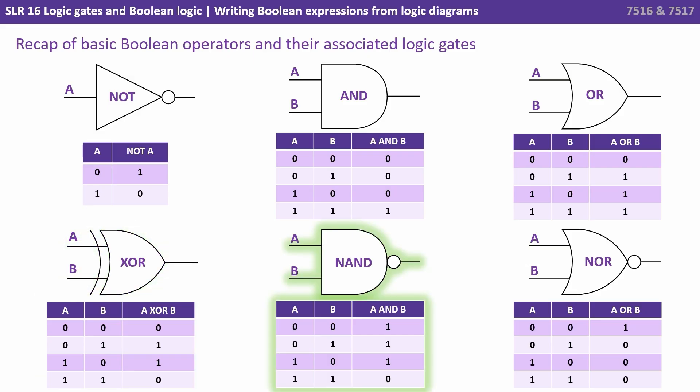We have a NAND gate which is a NOT AND gate. It effectively reverses the output of an AND gate. And a NOR gate, a NOT OR gate which effectively reverses the output of a NOR gate.